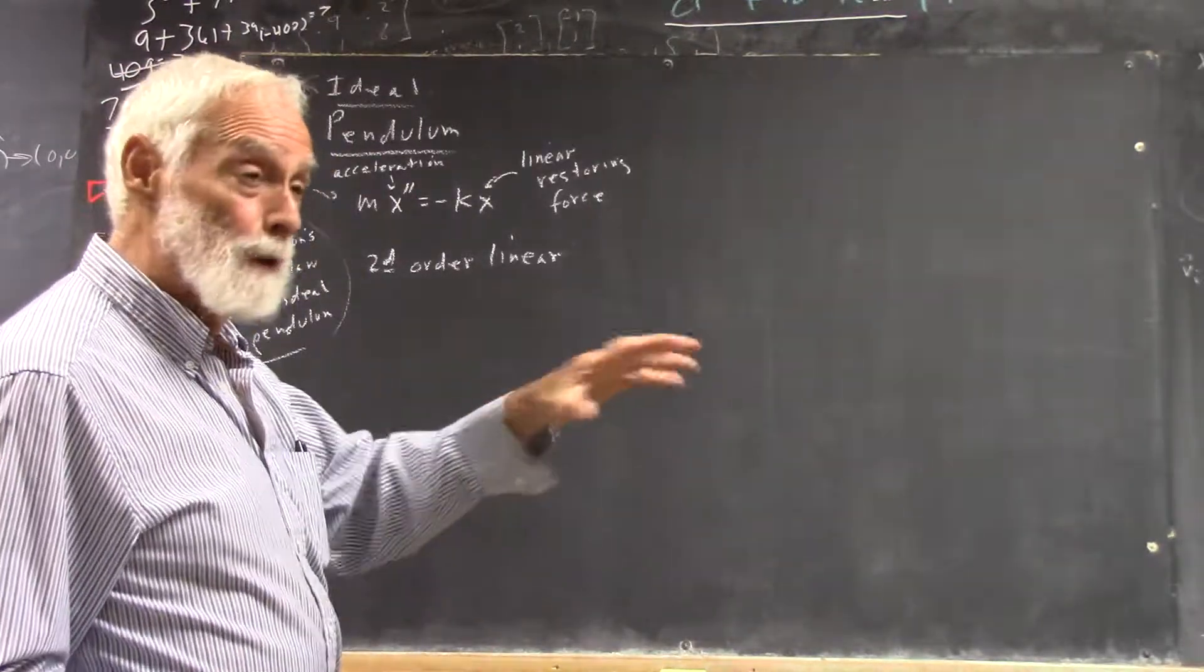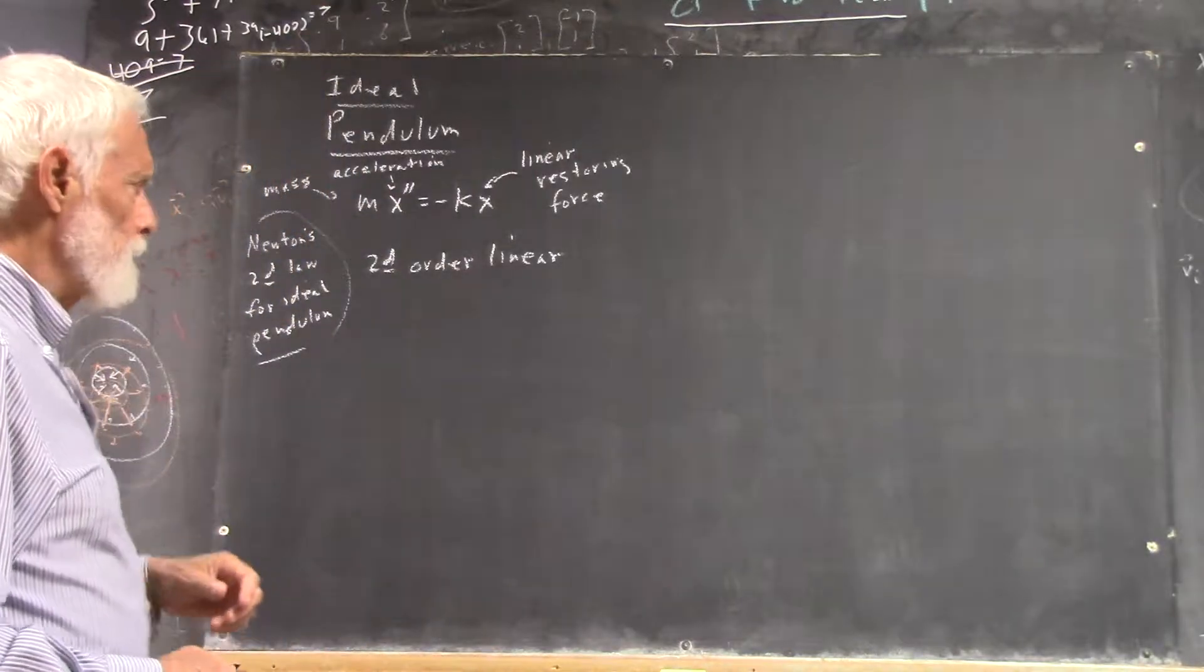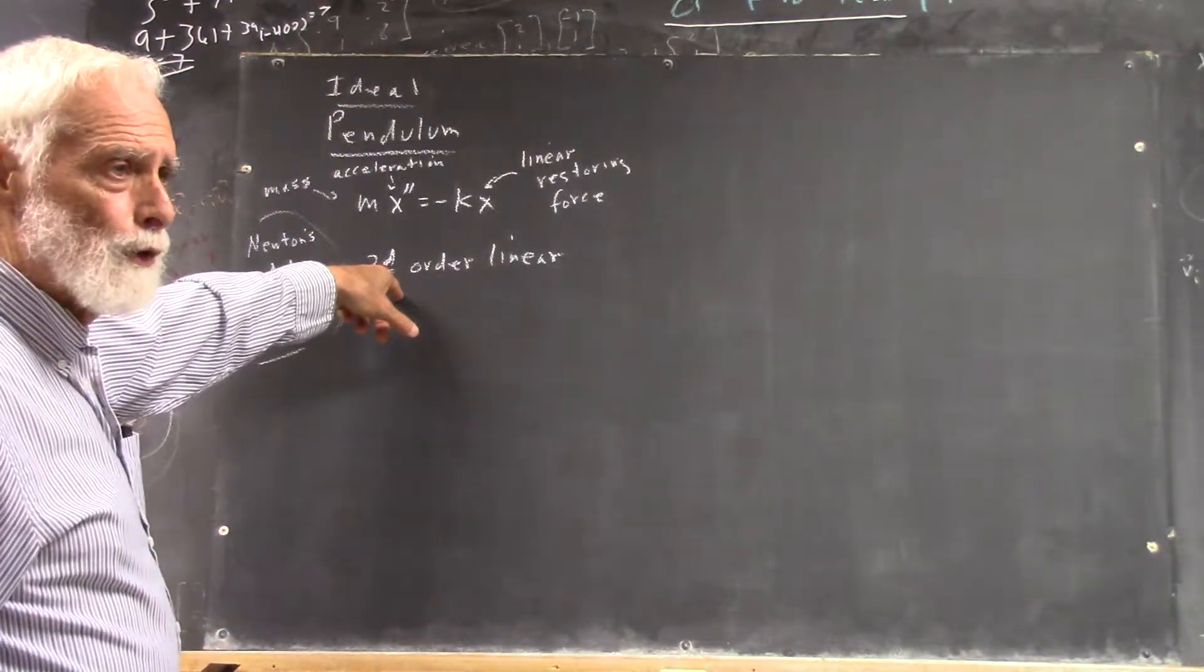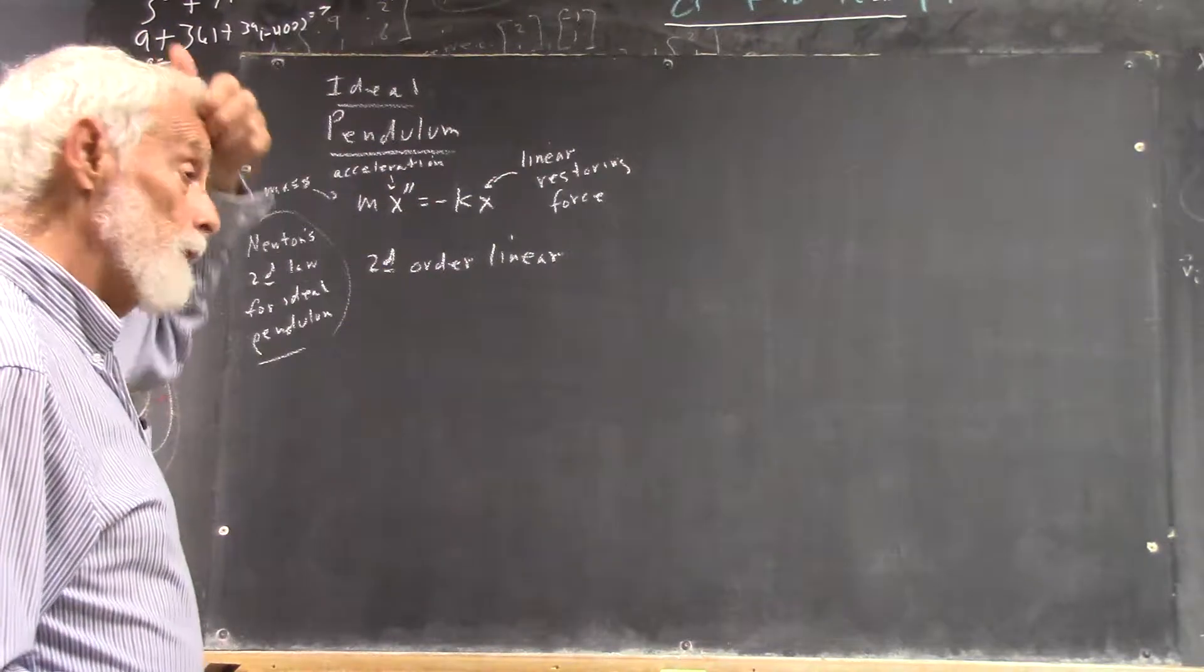You know, 2x squared minus 5x plus 7 equals 0. Now, it comes back to them because they've done it, but they're rusty. It's like you all are a little rusty with your calculus. That's coming along okay. I mean, it's looking pretty good. We'll see how you do with the integration part. So, second order linear, right? Is it homogeneous or non-homogeneous?